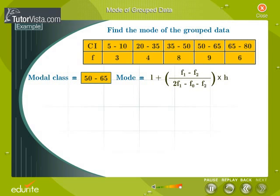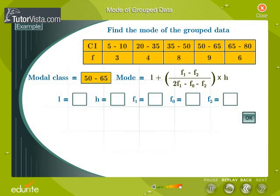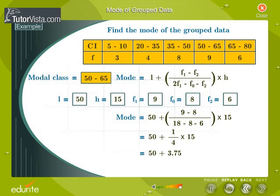We now apply the formula for finding the mode. Key in the values for L, H, F1, F0, and F2. Mode is equal to 53.75.